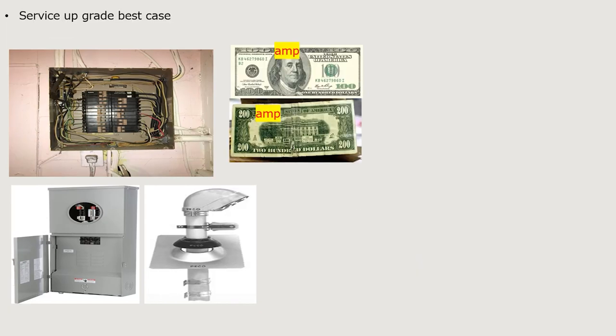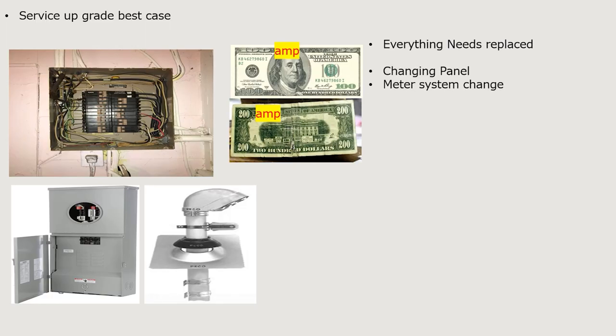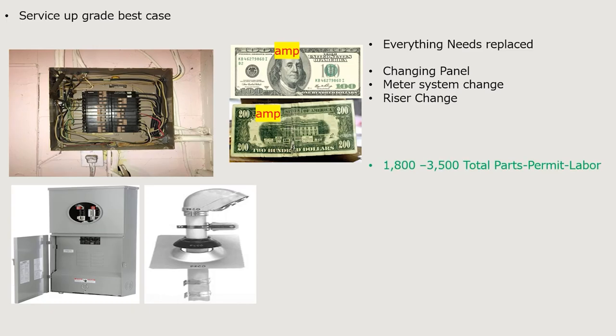Finally, let's talk about the service upgrade — this is when we're upgrading from 100 amps to 200 amps, or 200 to 225, or 225 to 400, whatever the scenario. You usually can't save any piece of this because the pipe and wire were smaller — everything is a total loss and has to be completely redone. We're changing the panel, the meter system, and doing a riser change. This is going to run between $1,800 and $3,500 — and it could go much higher.